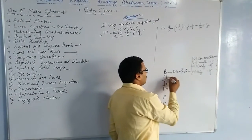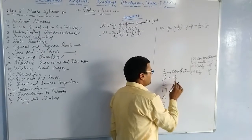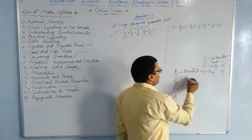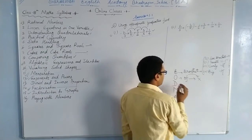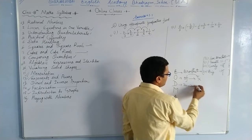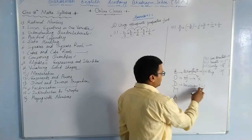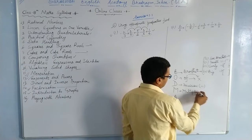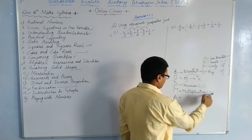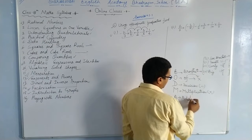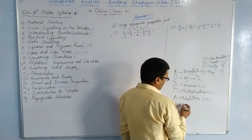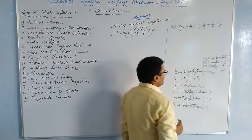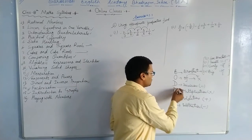Next, O stands for 'of'. If the word 'of' is written in our sum, we have to replace it with the multiplication symbol. D stands for division. M stands for multiplication. A stands for addition, and S stands for subtraction.